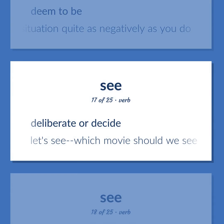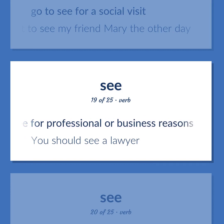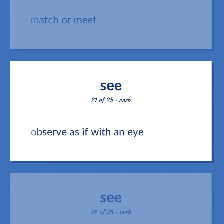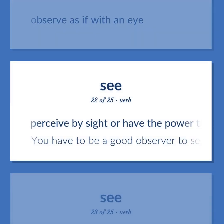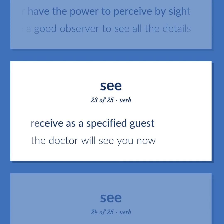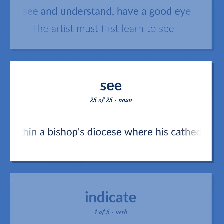Deliberate or decide — let's see, which movie should we see tonight? Go to see for a social visit — I went to see my friend Mary the other day. Go to see for professional or business reasons — you should see a lawyer. Match or meet. Observe as if with an eye. Perceive by sight or have the power to perceive by sight — you have to be a good observer to see all the details. Receive as a specified guest — the doctor will see you now. See and understand; have a good eye — the artist must first learn to see. The seat within a bishop's diocese where his cathedral is located.